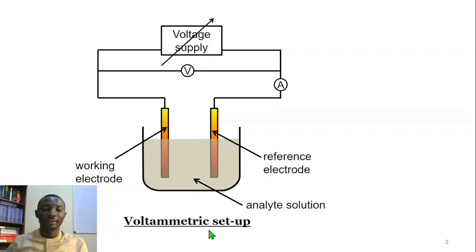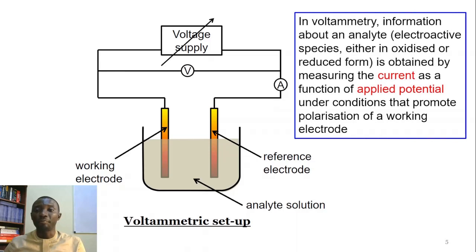Here is a simple setup of voltammetry using planar electrodes. This is the conventional voltammetry, the standard one, using planar working electrode and planar reference electrode. This is the analyte solution, and this is connected to some voltage supply. The voltmeter is linked to it to measure the voltage that is being delivered into the system. An ammeter is there to measure the current across the system. In voltammetry, information about an analyte electroactive species, either in the oxidized or reduced form, is obtained by measuring the current as a function of applied potential. This is done under conditions that promote polarization of the working electrode.